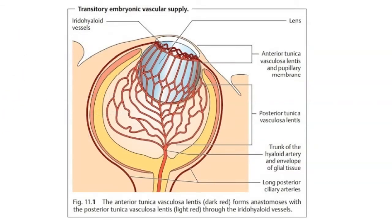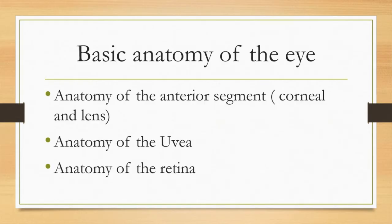The lens has three proteins called alpha-crystallin and beta-gamma crystallin. These are heat shock proteins or chaperones that maintain and preserve the cytoskeleton, preventing denaturation of the protein, as we will see in the upcoming lecture.